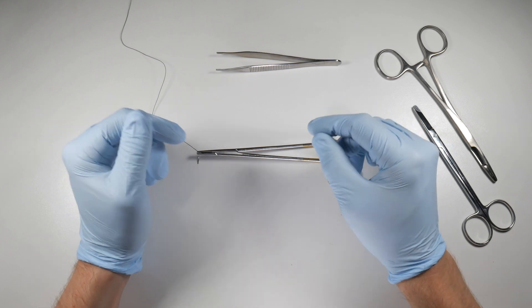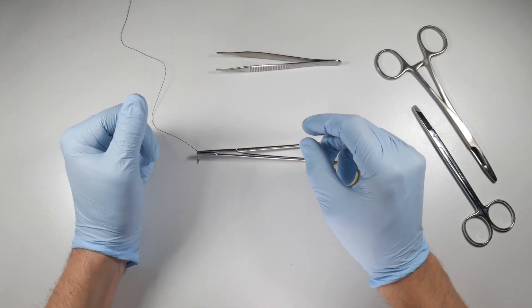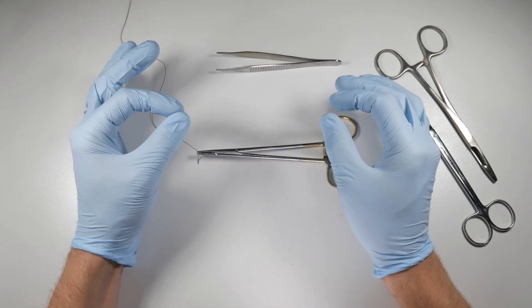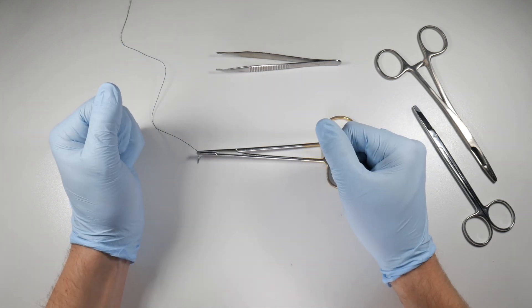The third reason might be if we have a bleed and we know that we want to apply some more pressure, that we might pack that socket, suture over top, and apply pressure to help stop some of that bleeding.